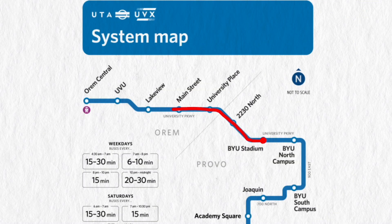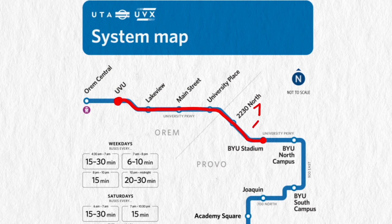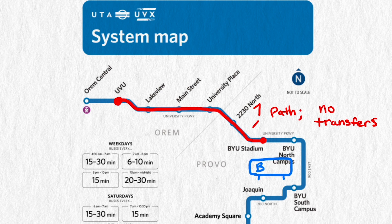One simplifying assumption I'm going to make is that we're traveling on one path with no transfers. The stretch of the bus system that I drive by on my way to work connects two universities: Brigham Young University and Utah Valley University. They're about four and a half miles apart.